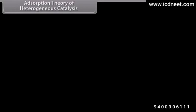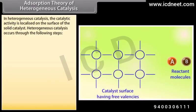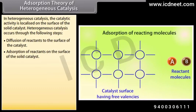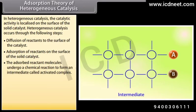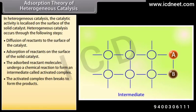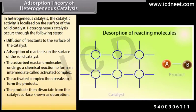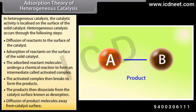In heterogeneous catalysis, the catalytic activity is localized on the surface of the solid catalyst. Heterogeneous catalysis occurs through the following steps: diffusion of reactants to the surface of the catalyst; adsorption of reactants on the surface of the solid catalyst; the adsorbed reactant molecules undergo a chemical reaction to form an intermediate called activated complex; the activated complex then breaks to form the products; the products dissociate from the catalyst surface, known as desorption; and diffusion of product molecules away from the catalyst surface.